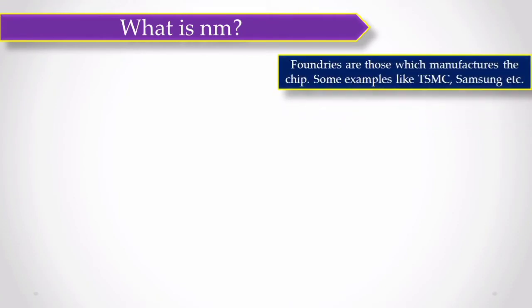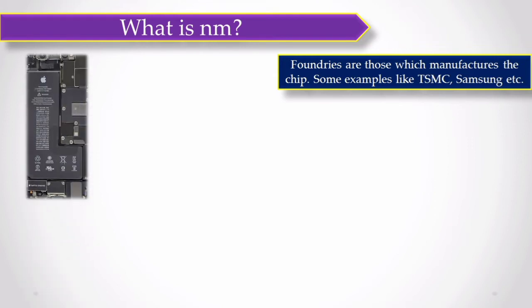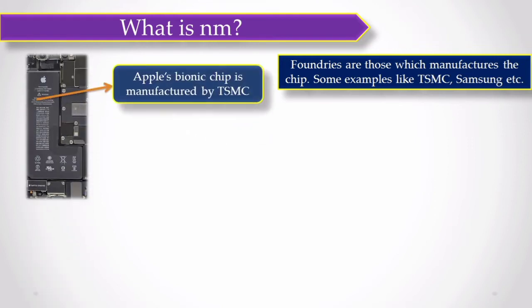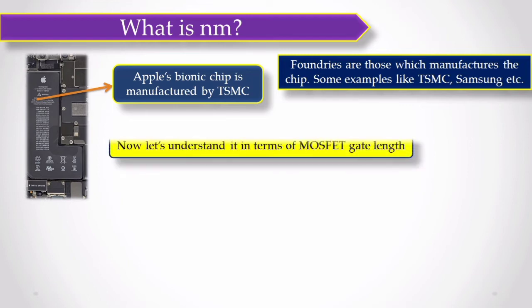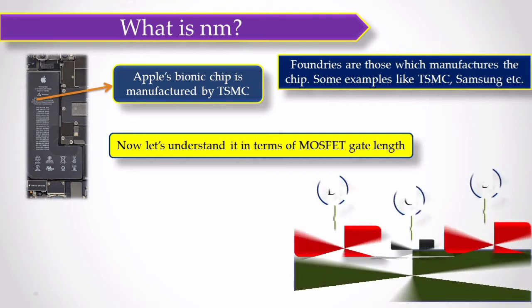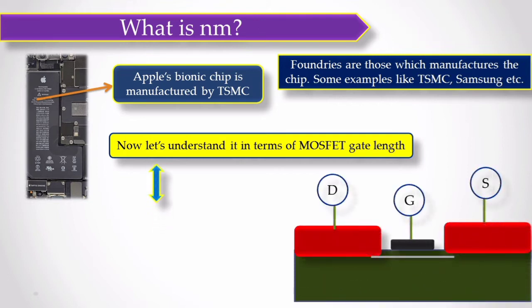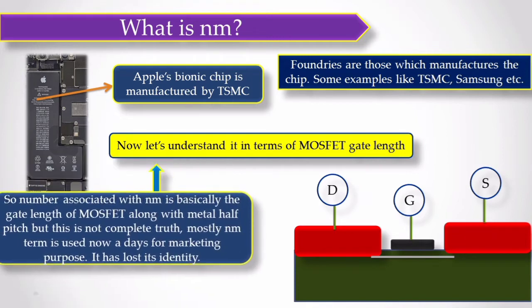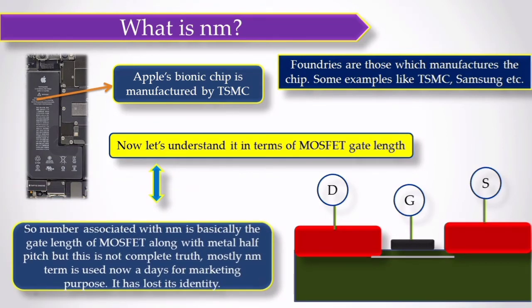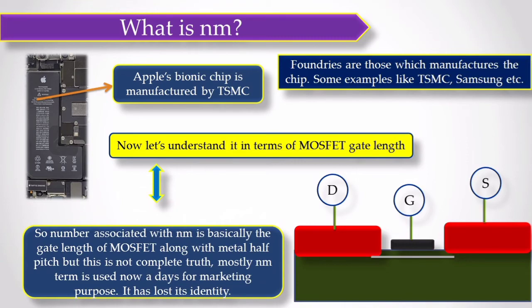So first, let's clear what is nanometer. When nanometer is basically corresponding to the technology node at which chip is being fabricated. You might have heard about Apple's bionic chip like A13, A14. So that basically gets manufactured from TSMC. And TSMC have manufactured that at 5 nanometer technology or 3 nanometer technology. So that nanometer basically corresponds to technology node at which chip is being fabricated. In transistor terms, if you try to understand what is nanometer, it basically explains the length of transistor gate and metal half pitch.